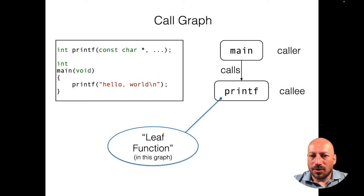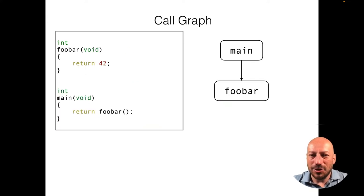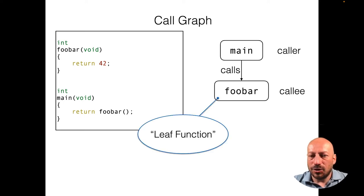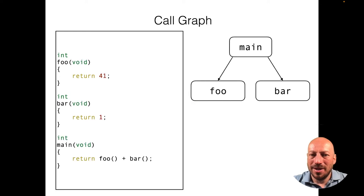Technically this is not correct, because printf is a function from the standard library which internally calls other functions. So just change it to an example where foobar is certainly not calling other functions. Here we really have one leaf function. To give you an idea that this can look like a tree in general, let's change it to an example where we have two function calls in main — so this looks like a tree, just upside down, with two leaves.